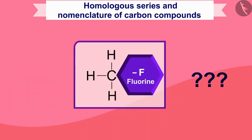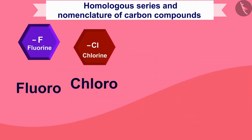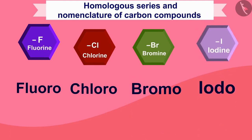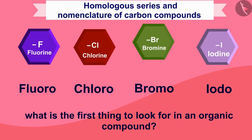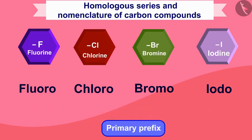What to write if fluorine is added in carbon compounds? Write 'fluoro' before the name. If chlorine is added, write 'chloro'. If bromine is added, write 'bromo'. And if iodine is added, write 'iodo'. So the first thing to look for in an organic compound is: do you see fluorine, chlorine, bromine, or iodine? Then we can write the primary prefix accordingly.